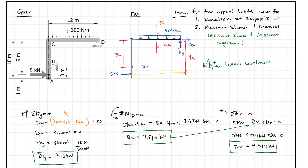In a previous video, we went forward and solved for the reactions of this frame. It's a two-dimensional structure with simple supports, and we solved for the reactions. Now what we're going to do is find the maximum shear and moment in this frame, and to do that, we're going to construct the shear and moment diagrams.